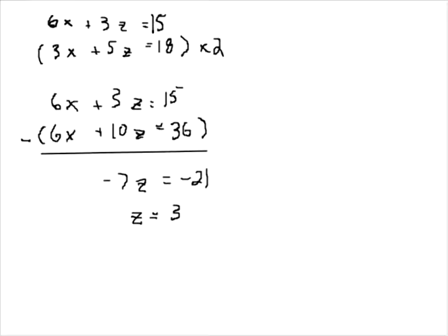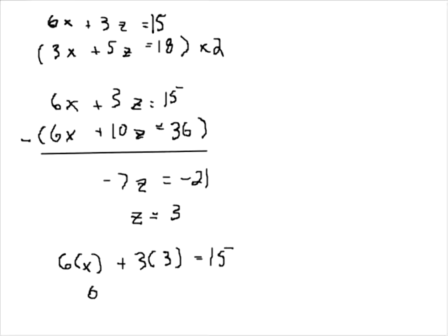Now that we know z = 3, we can take that and plug it into one of the two equations. Let's use the first one: 6x + 3(3) = 15, so 6x + 9 = 15, giving us 6x = 6, and therefore x = 1.